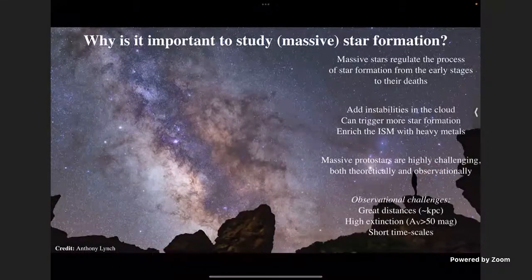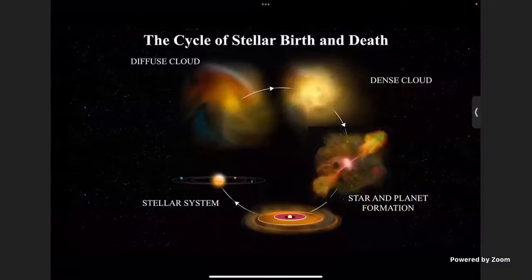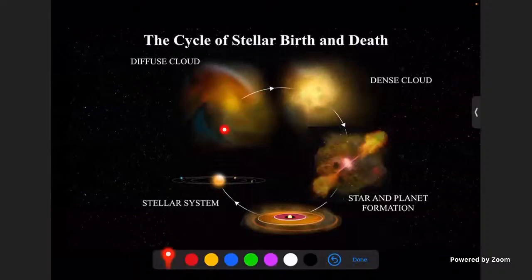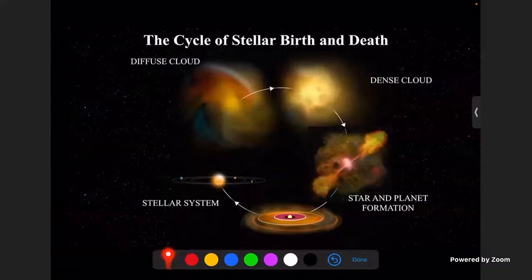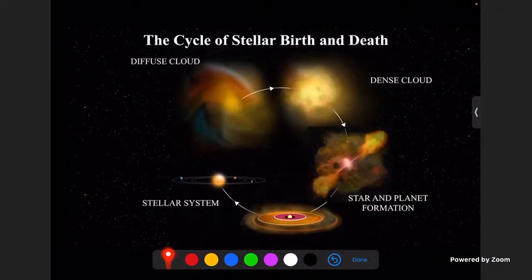Massive stars are really challenging to study both theoretically and observationally. Some observational challenges are that they are located at great distances of several kiloparsecs, they have high extinctions, and they live short lives. I like to say massive stars are the rock stars of the universe — they live fast. In the stellar birth and death cycle, a diffuse cloud undergoes gravitational collapse to form a dense cloud, and within that cloud we have different cores.